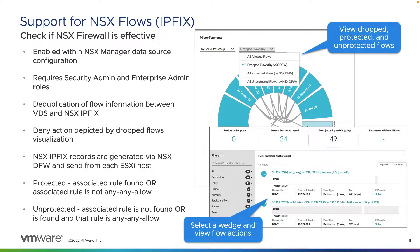Ingesting NSX flows allows us to determine things like north-south and east-west traffic, check whether NSX is dropping any flows, see which flows NSX is protecting with firewall rules, and identify unprotected flows — making it easier to determine if a rule needs to be implemented. We can also see all flows, dropped flows, rule hit counts, and more, just as with third-party firewalls within vRealize Network Insight.